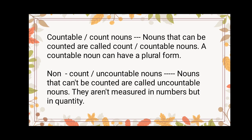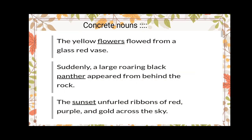These are the few points we have discussed up to our last class. Today we are proceeding towards another new type of noun, which is called concrete nouns. In order to have a definite idea of concrete nouns, here I have listed two examples. Number one: the yellow flowers float from a glass red bus. Number two: suddenly a large roaring black panther appeared from behind the rock. Number three: the sunset unfolds ribbons of red, purple, and gold across the sky.